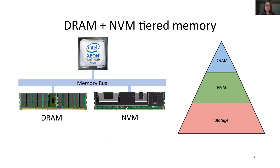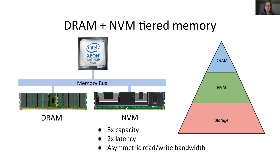Now that non-volatile memory is commercially available, systems are starting to deploy it as additional main memory capacity. NVM's high capacity, up to eight times the capacity of DRAM, makes it particularly attractive to use this way. However, commercially available NVM also has some unique performance characteristics that make it different from DRAM. Namely, it has up to two times the latency of DRAM, asymmetric read and write bandwidth, as well as higher overheads for small accesses.